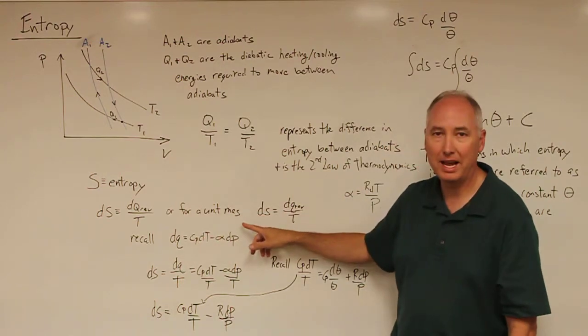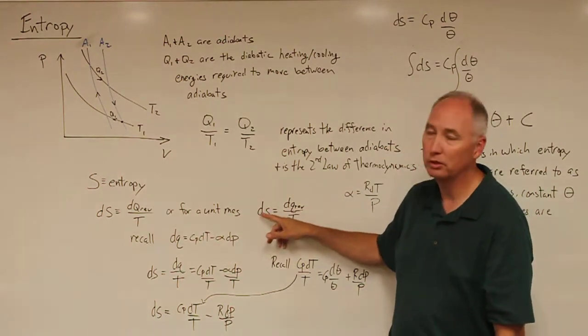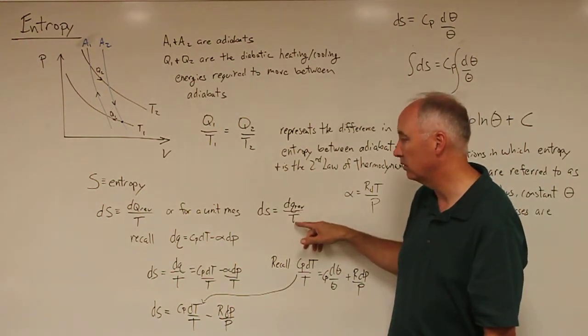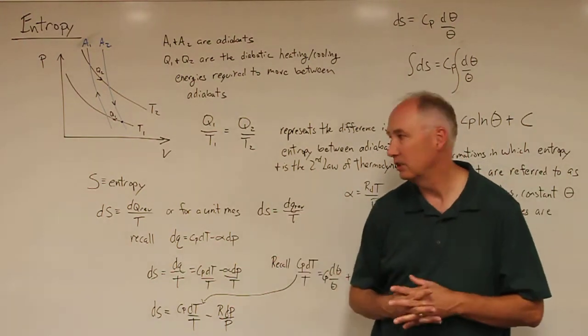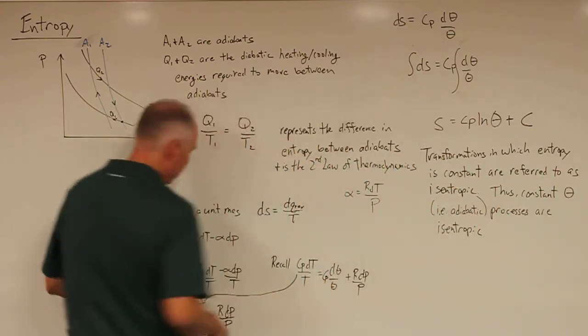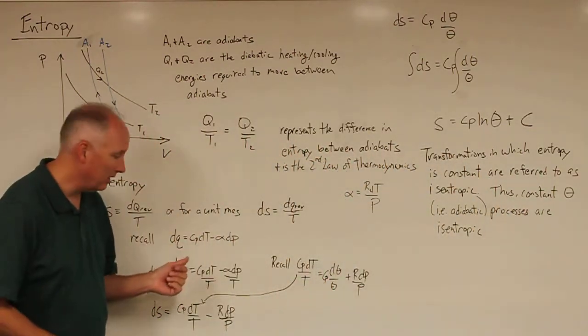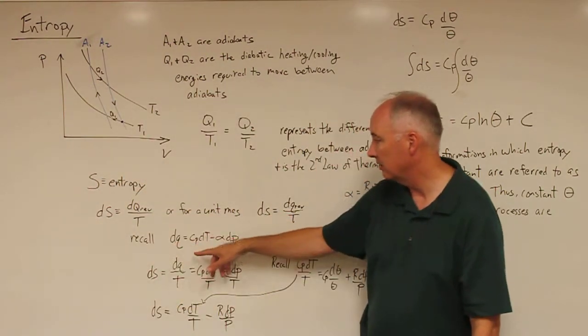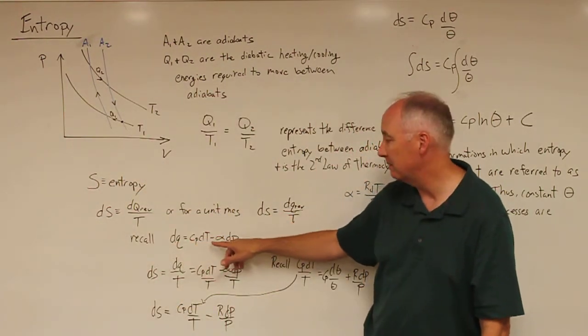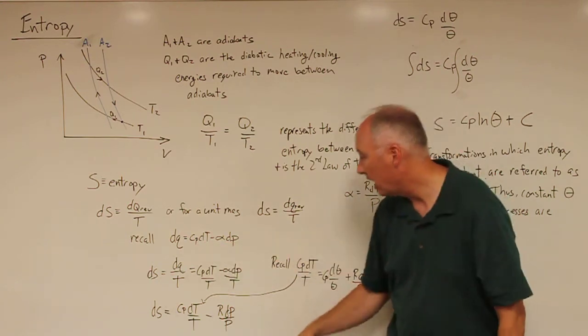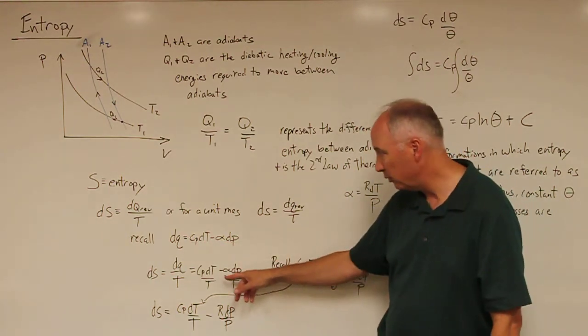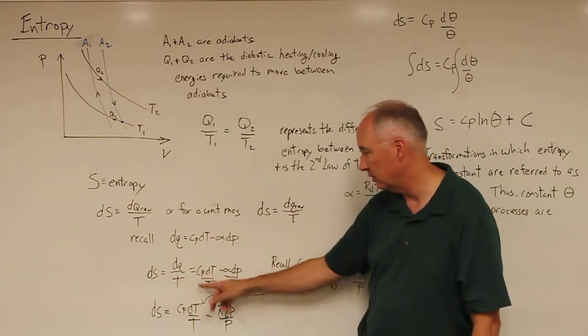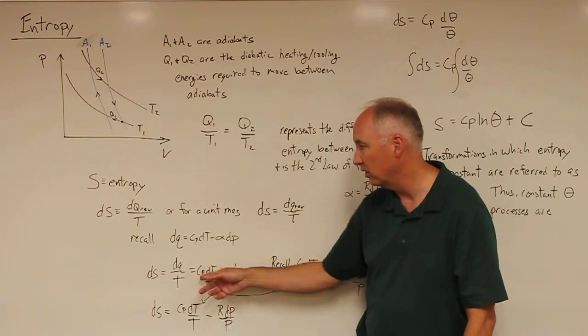For a unit mass, lowercase ds is going to equal dQ reversible over temperature. That's our definition of entropy. You can recall from the first law of thermodynamics that dQ equals C sub P dT minus alpha dP. If we divide both sides by temperature, you get dQ over T equals these quantities divided by temperature, and that by definition